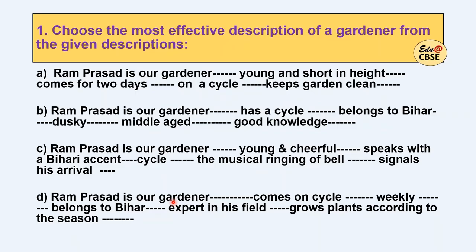First question. These are multiple choice questions, so mark the answer and in the end I'll be discussing the answers. So first one: choose the most effective description of a gardener from the given descriptions. Pause here, read all of them, and then select your answer.